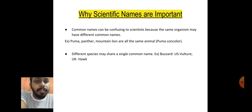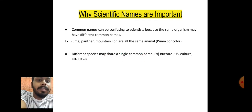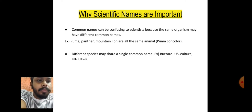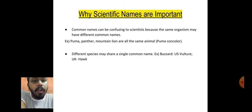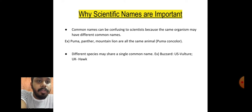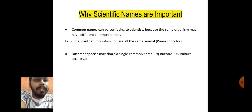Also, different species may share a single common name. For example, 'buzzard' is a common name shared by both vulture and hawk, which are two different species. This is also confusing to scientists, so to remove this confusion, a single universally accepted scientific name is given to each organism.